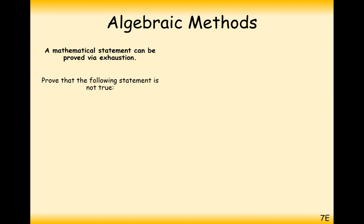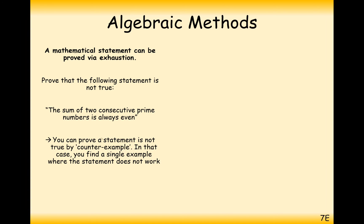Okay, a different type of proof now. Now, we're going to look at how we prove that something is not true. So in this case here, the sum of two consecutive prime numbers is always even. We're going to prove that this is not true. And the only thing that we need to do to prove that something is not true is to find a counterexample.